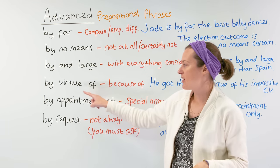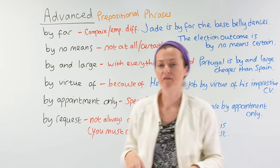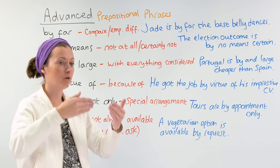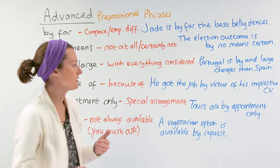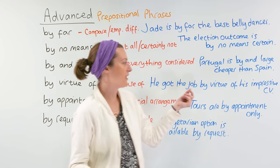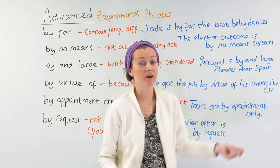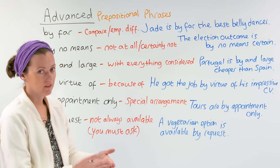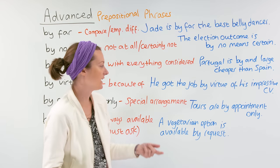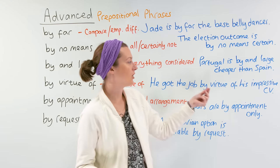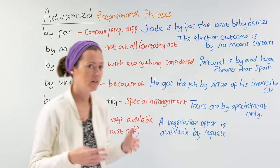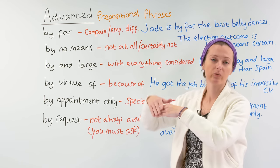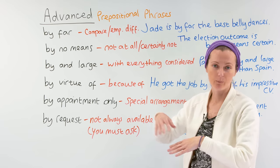Next I have 'by virtue of,' which means because of — this is slightly formal or elevated language. Example: 'He got the job by virtue of his impressive CV.' So he had a lot of experience and we gave him the job because of that. We could also say 'he got the job because of his impressive CV,' but the prepositional phrase 'by virtue of' sounds a bit higher and more elegant.